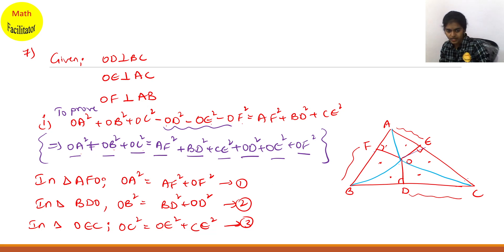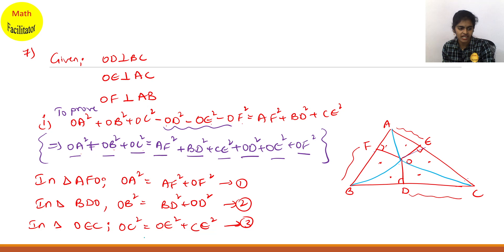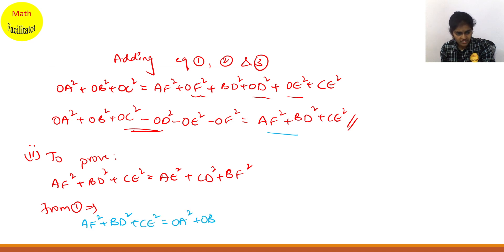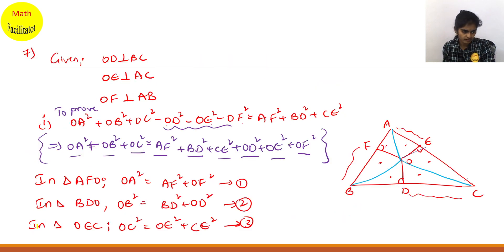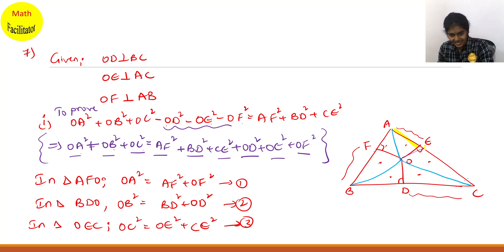AE square is nothing but OA square minus OE square. From whatever we have proved, I am taking — from the first bit. There are two methods: from the first bit, how you will solve: AF square plus BD square plus CE square equals OA square plus OB square plus OC square minus OE square minus OD square minus OF square. But I want AE square now. AE square, using Pythagoras theorem, OA square minus OE square gives you AE square.